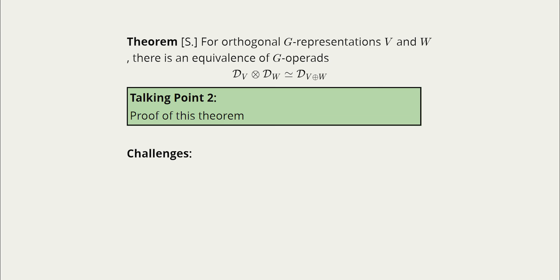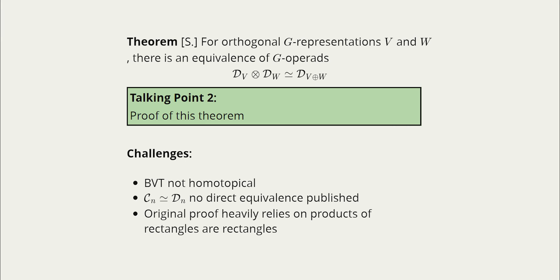The proof of this actually was a little bit trickier than you might expect. There's a few big challenges that I had to get around. First one is that the Boardman-Vogt tensor product is not homotopical. So even if we think about this non-equivariantly, the little disks are equivalent to little cubes but this doesn't then give us a little disks additivity theorem. And also there's no published proof that directly gives you a comparison between the two operads. Also the original proof heavily relies on the fact that products of rectangles are rectangles which is not true at all for disks. So there was a few things I had to get around and the solution turns out to be satisfyingly geometric actually so I'd love to talk about this.